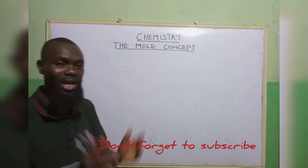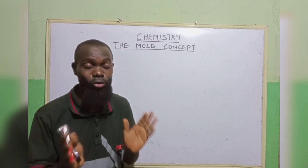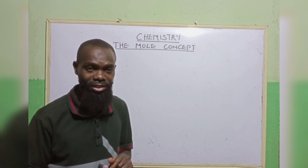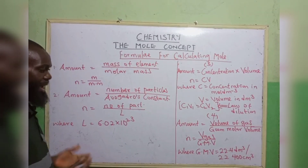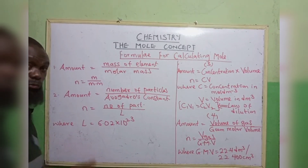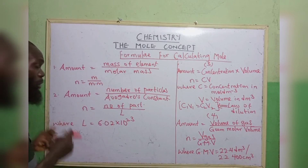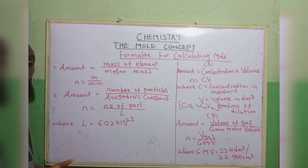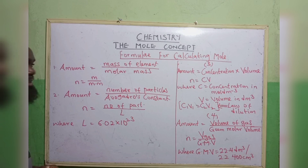What are the formulas for calculating mole? There are about six formulas for calculating mole, but we are going to talk about just four in this class. The first formula: amount equals to mass of elements over molar mass. This molar mass can also be a relative molecular mass. Where n stands for the amount, equals to mass over molar mass.